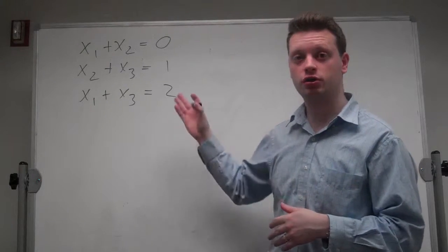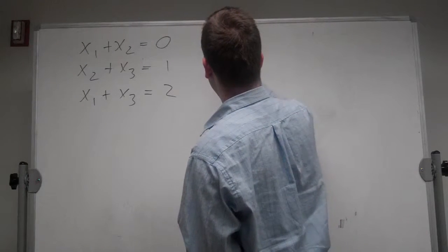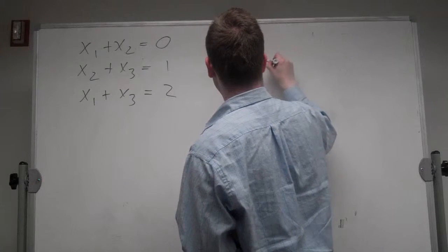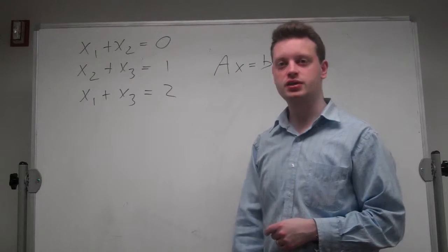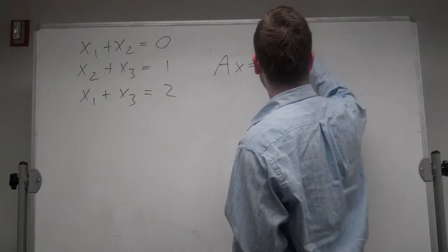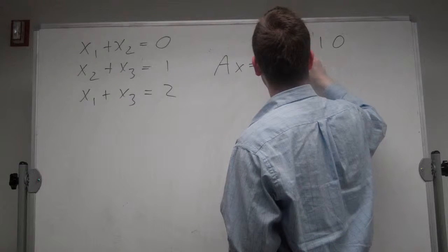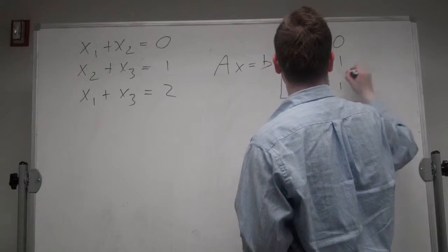Alternatively, you might have learned that you can show this system of equations in matrix form. So you can write Ax is equal to b. In this case, A will be equal to the following matrix: 1, 1, 0; 0, 1, 1; 1, 0, 1.